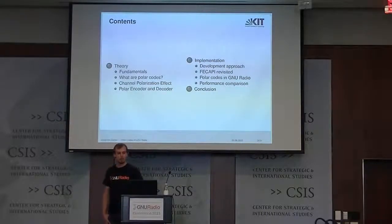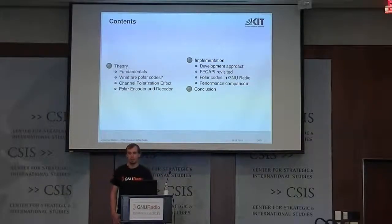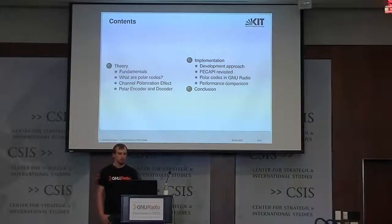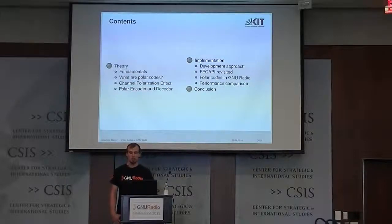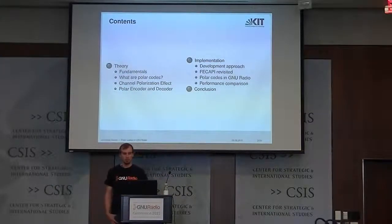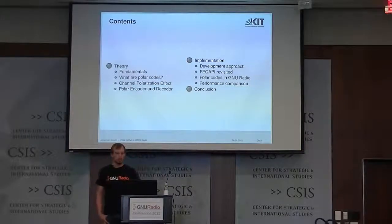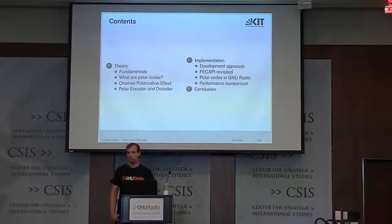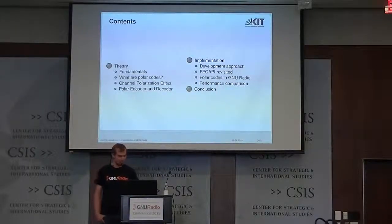Polar codes might be a promising approach to have a better link budget. Here's a little bit about the contents of my talk: first, I'll talk about some theory about coding, then I'll go on to talk about my implementation, present how I approached my project, give a brief introduction to the FEC API, have a look at the polar code flow in GNU Radio, and finally a performance comparison. I'll sum it up with a conclusion.